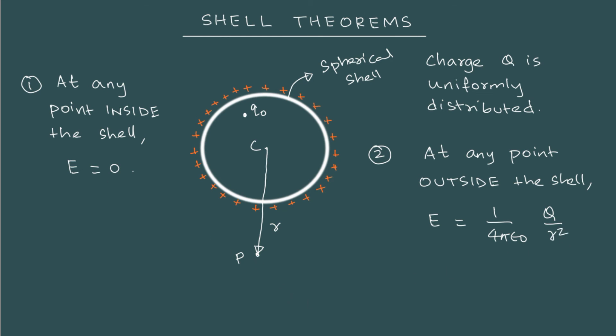The electric field direction, because we have a positive charge distribution, will be radially outwards. Now, just take a look at the electric field expression we have written. Instead of the shell, if you had a positive point charge placed at point C, that point charge would have created the same electric field. So the second shell theorem is really saying this.